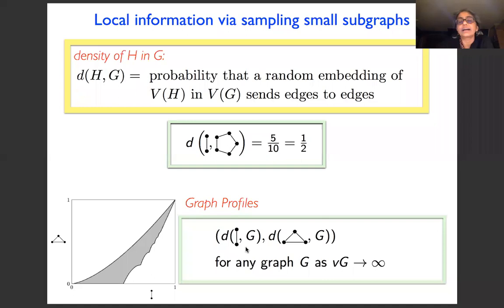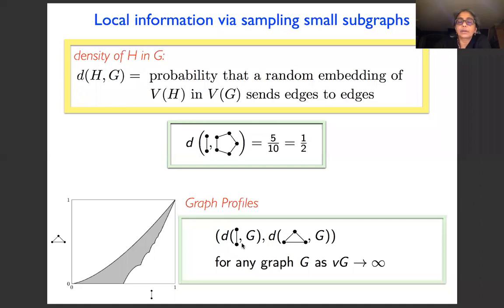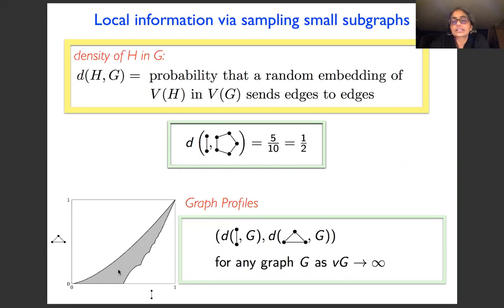For example, take the small graph which is an edge and another small graph which is a triangle, and plot the density of the edge in G and the density of the triangle in G for any graph G as the number of vertices goes to infinity. Both are probabilities between 0 and 1, so these points live inside the unit square. As you plot these numbers for very large graphs, you get a shaded region — the edge density on the horizontal axis, triangle density on the vertical axis.